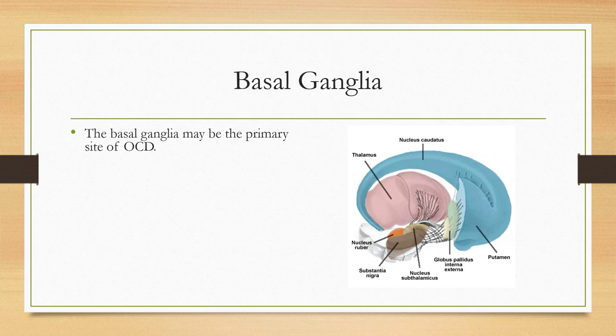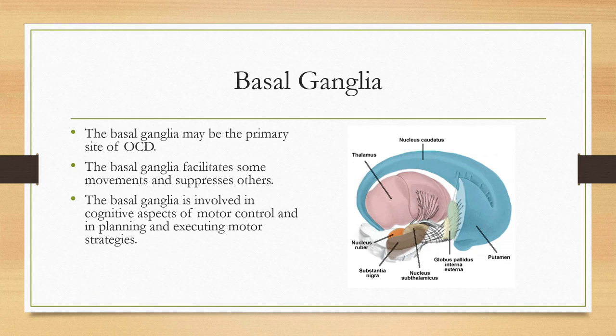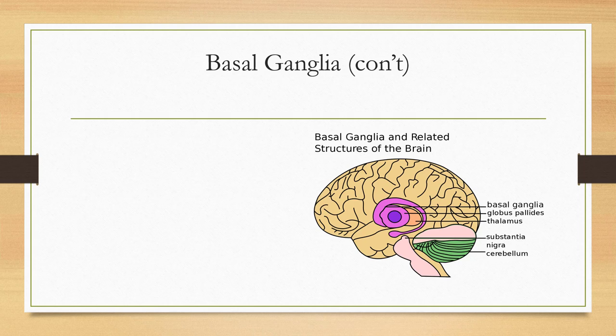The basal ganglia may be the primary site of obsessive-compulsive disorder based on more recent research. The basal ganglia facilitates some movements of the body and suppresses others. It is also involved in cognitive aspects of motor control, in planning, and in executive motor strategies.